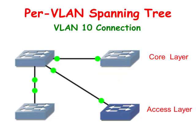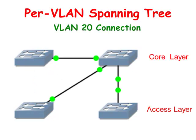Per VLAN Spanning Tree treats each VLAN as a separate network. It has the ability to load balance traffic at Layer 2 by forwarding some VLANs to one trunk and other VLANs to other trunks without causing a spanning tree loop.